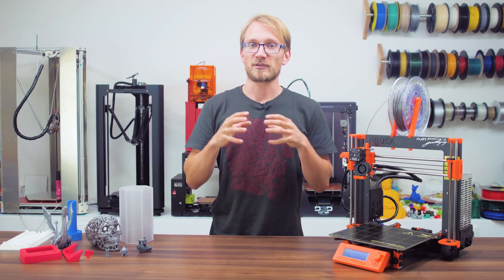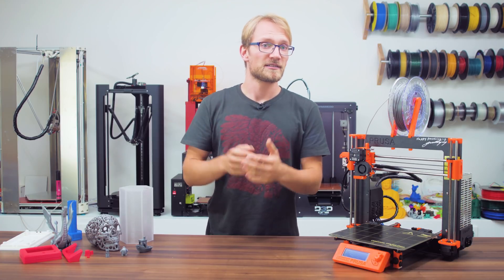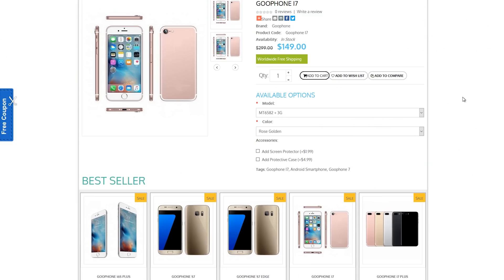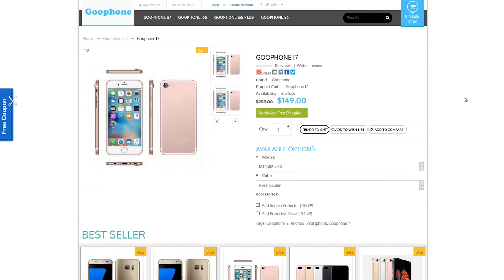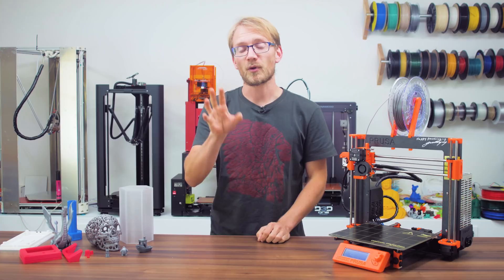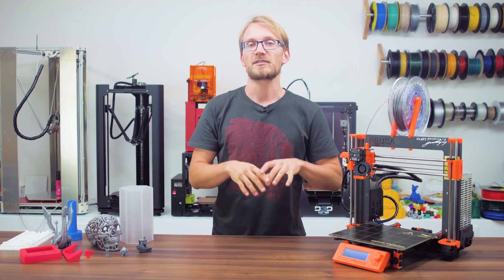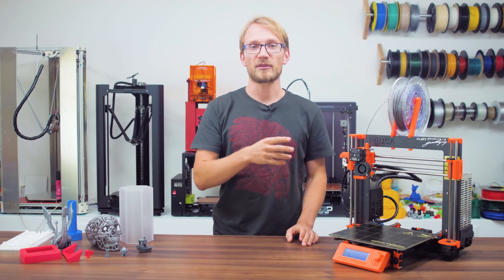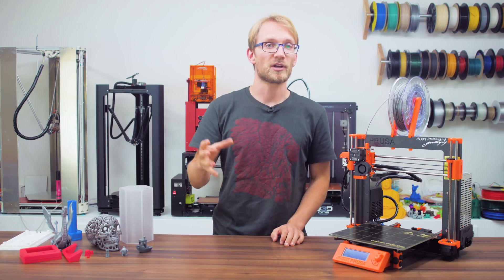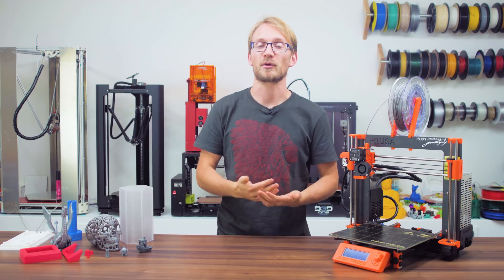But thinking you'll get the exact same experience from any of those kits from far-east sellers would be like buying this Goofone i7 and expecting it to rival an actual Apple iPhone 7. You get the idea. Now, of course, the Prusa i3 design is completely open-source, both the hardware and the software, and the MKII comes with a bunch of very clever features for both of them.